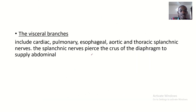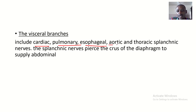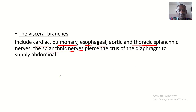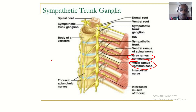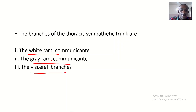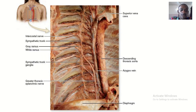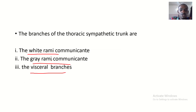Next we have the visceral branches, which include the cardiac, pulmonary, esophageal, aortic, and thoracic splanchnic nerves. The splanchnic nerves pierce the crura of the diaphragm to supply the abdominal region.